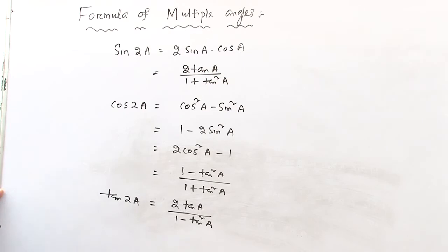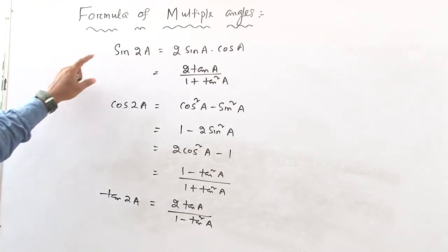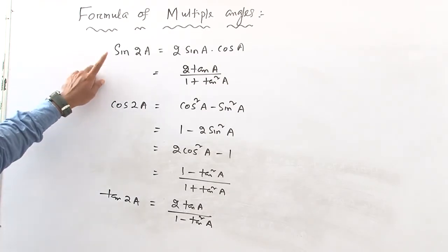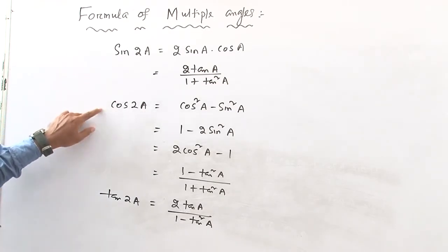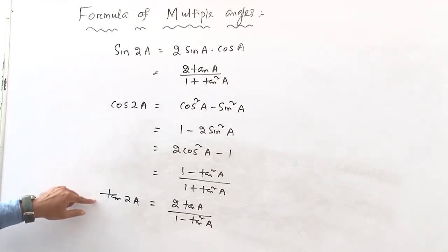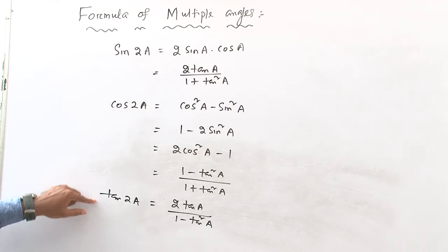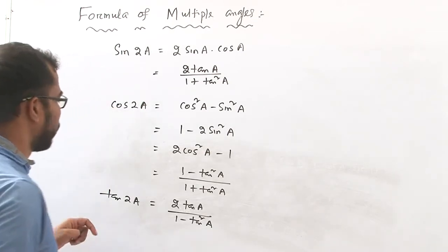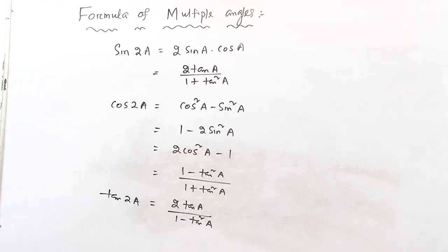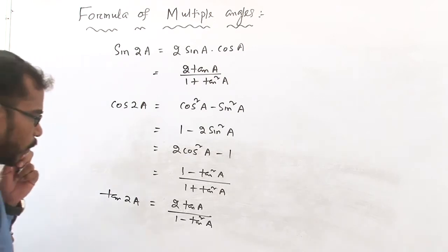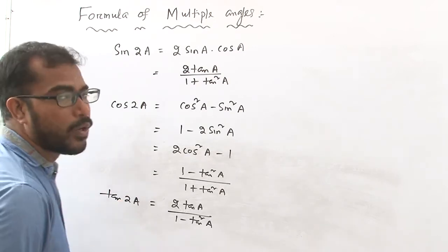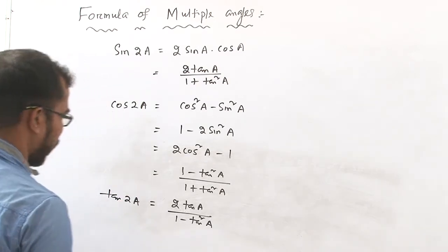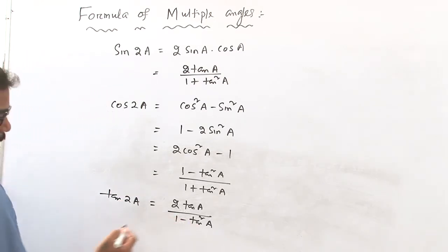The formula of sin 2a, cos 2a, and tan 2a are the primary formulas of trigonometric ratios — that means double angle formulas. So tan 2a equals 2 tan a by 1 minus tan square a.